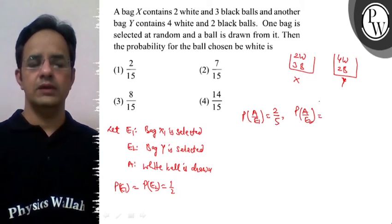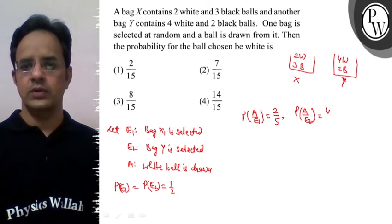Probability of A given E2 means white one from the second bag. So it will be 4 upon 6, which is 2 by 3.